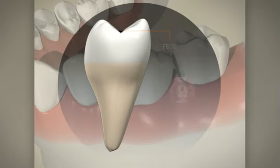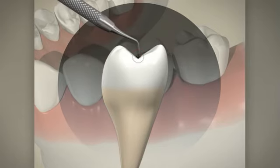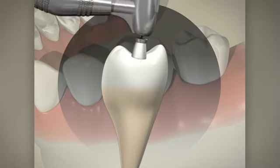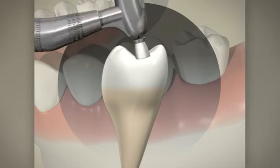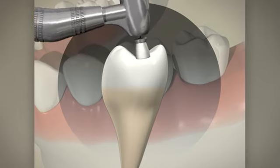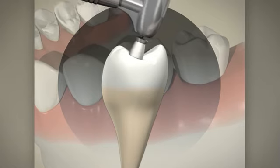To apply a sealant to deeper pits and fissures on the surface of your teeth, any food and plaque are first removed. The teeth at risk of decay are then cleaned of any debris with an abrasive paste to ensure a clean surface for the sealant.